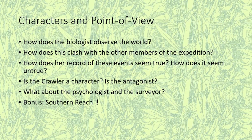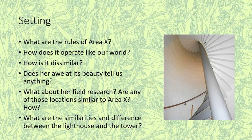For the setting, here are some questions to consider. What are the rules of Area X? How does it operate like our world, and how is it dissimilar? Does the biologist's awe at its beauty tell us anything, and could that beauty be hiding something? What about the locations where she has conducted field research — are any of those similar to Area X, and how? There's often a sense of remoteness in the areas we see, and there's always a whole bunch of the natural world. Why is that significant to this novel? The other two key physical locations are the lighthouse and the tower — how are they similar and how are they different? In a way, they both spiral up and down, and they're almost like inverted versions of one another.